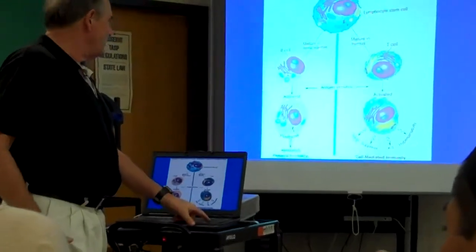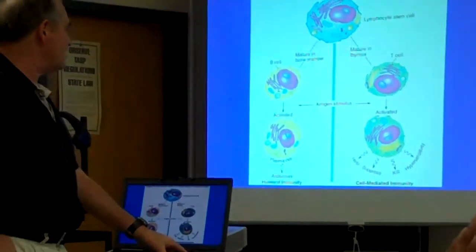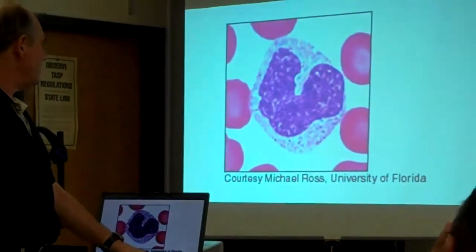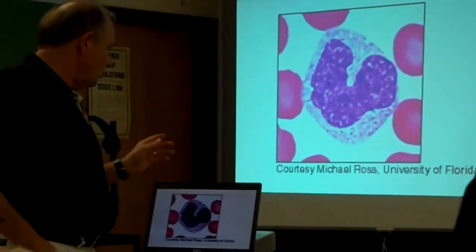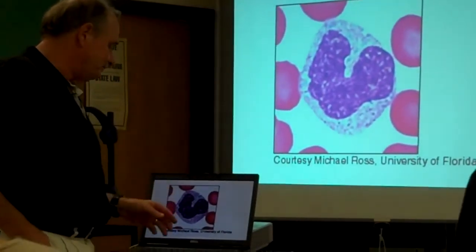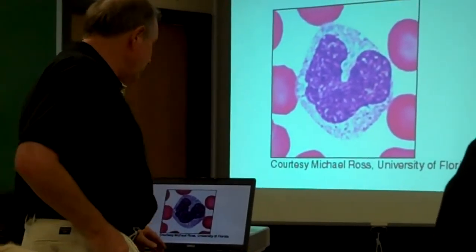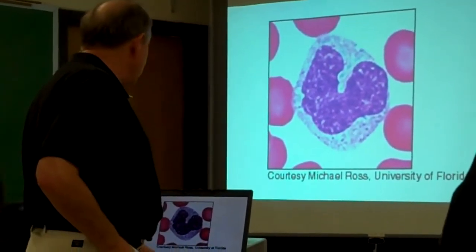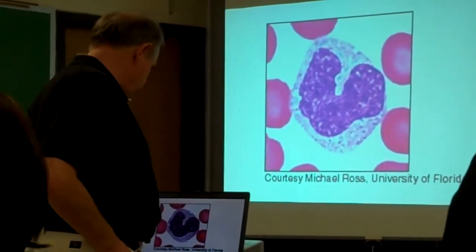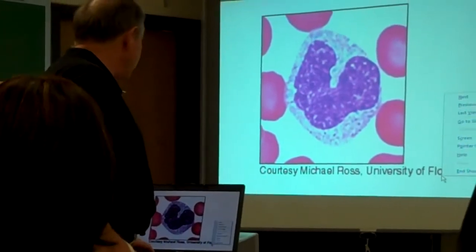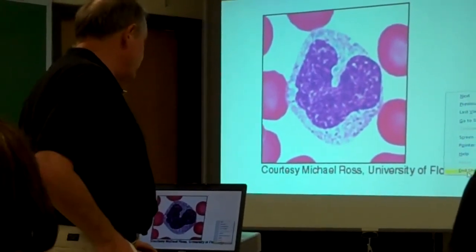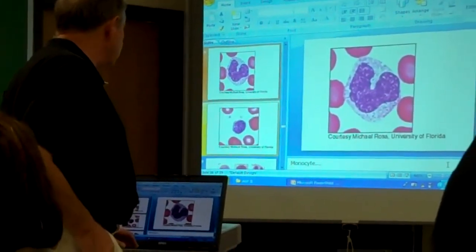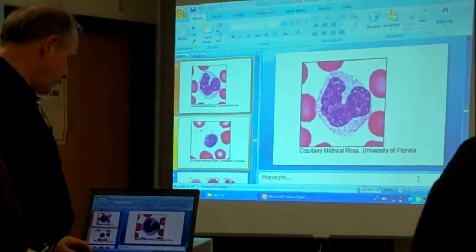Right here, this one would be like a — let me just show you on that one. That would be — and you don't have to draw these or anything — but notice the different shape of the nucleus. That would be a monocyte.